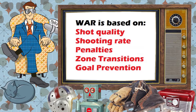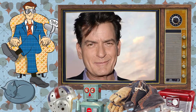Shooting rate is influenced by Corsi and Fenwick, which are the possession stats that compare shot attempts for and against when a player is on the ice. You'll notice a similar logic here: more shots for, more expected goals, more actual goals, and more winning.